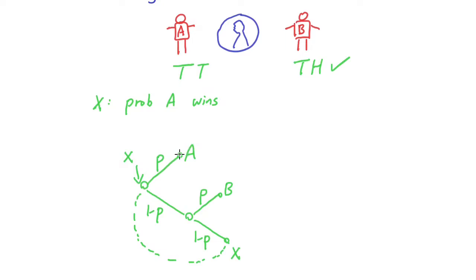So how do we express the probability that player A wins? Well, basically X is equal to, there's a probability P that player A wins. So here, probability that player A wins here is 1. So it could be P times 1...